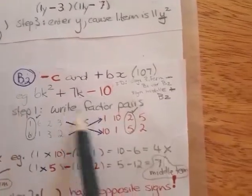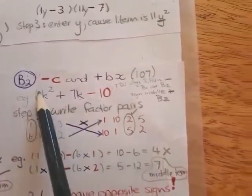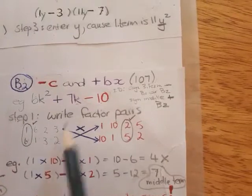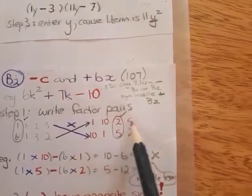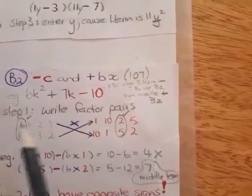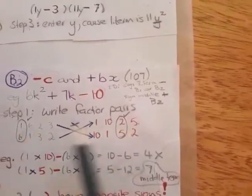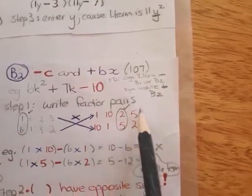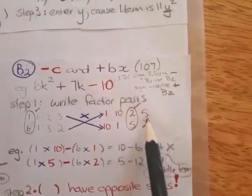In step 1, you write the factor pairs. Now for 6, there are 4 different factor pairs. For 10, there are 4 different factor pairs. And remember, you need to multiply one by one. And then the next one by the next one, until you find the correct difference.